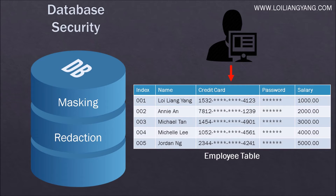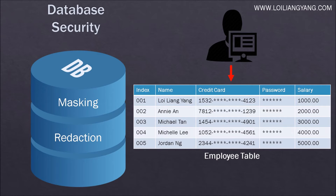Another form of database security is redaction. Redaction hides certain areas of the table column. In this example, the hacker can see only the first four digits and the last four digits of the credit card number, making the column practically worthless. At the same time, the password is also being redacted to show only asterisks, removing the ability for the hacker to see any valuable information.